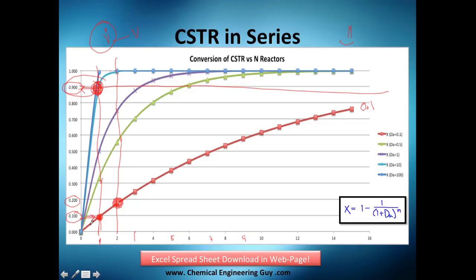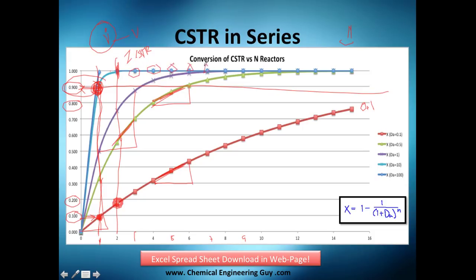As the number of reactors increases, conversion increases — more reactors means more reaction. But we're analyzing the Damköhler number — that's the interesting part. Look at the difference in slope from one curve to another: going from 0 to 1 conversion is a huge change in slope depending on Da. When you have two CSTRs with Da = 100, adding more doesn't make much practical sense — you're spending money on reactors without gaining much more conversion.